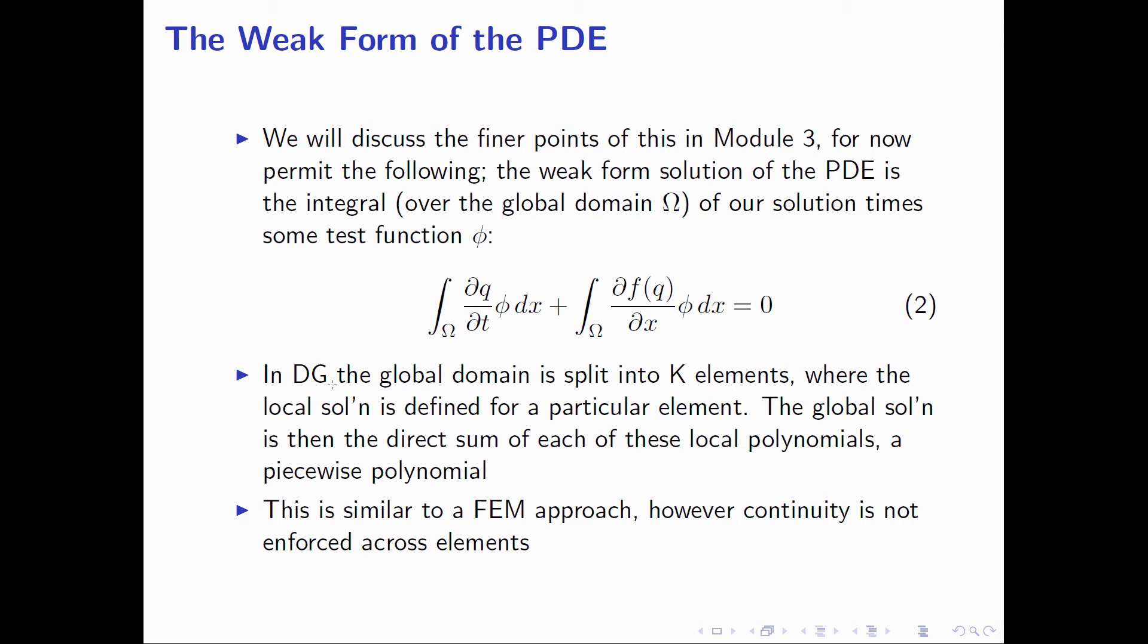In DG, the global domain is split up into K elements. We can imagine if we have a one-dimensional domain, here's our full global domain between these two bounds. We split it up into some amount of elements. In this case, imagine we split it into four elements.